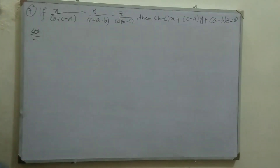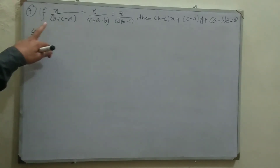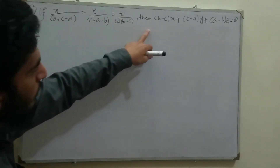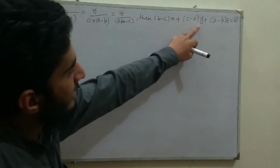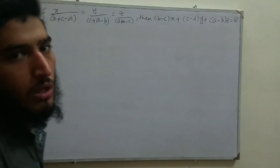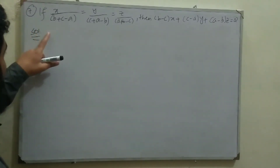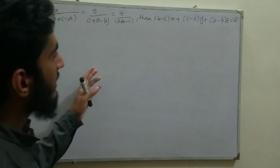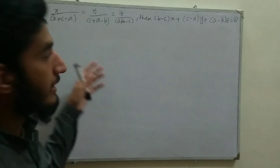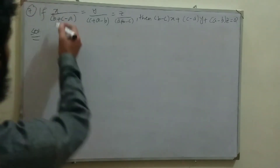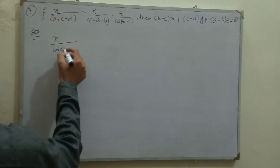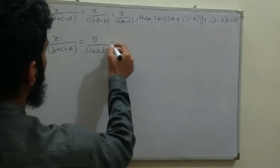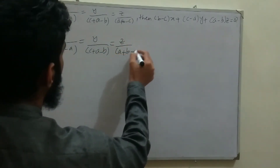Moving to Question 7 of Exercise 3.4. Question 7 states: if x/(b+c−a) = y/(c+a−b) = z/(a+b−c), prove that (b−c)x+(c−a)y+(a−b)z = 0. If we use the K theorem here the solution becomes difficult, so instead we use the substitution: let each fraction equal 1. Then x = b+c−a, y = c+a−b, z = a+b−c.